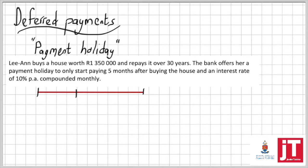They would tell you: Leanne buys a house worth 1.35 million and repays it over 30 years. The bank offers a repayment holiday to only start paying five months after buying the house. So how does the bank make it sound? You only have to start in like September? Oh, five months—amazing! You can take that money and use it in so many other places.